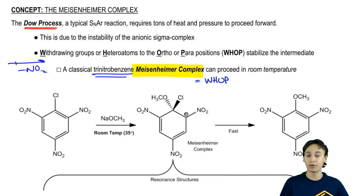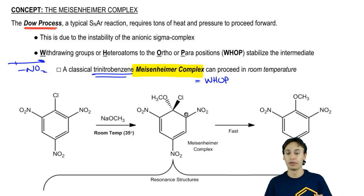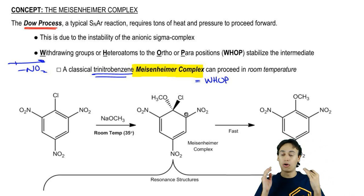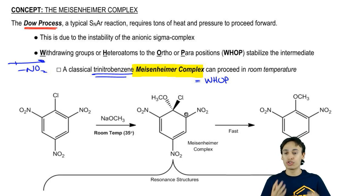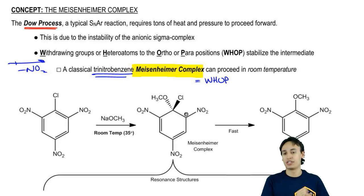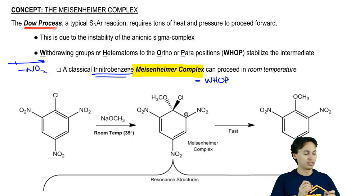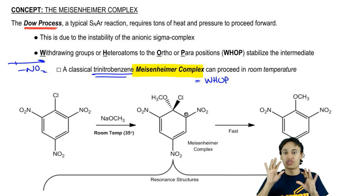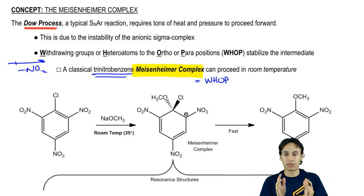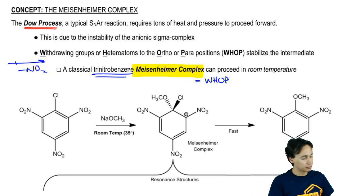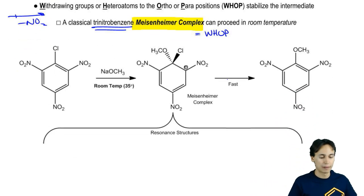A Meisenheimer complex is like an ultimate WAP where you have a molecule that has either heteroatoms or withdrawing groups in the ortho and para positions. Those are essentially synonyms of each other — a Meisenheimer complex is just any benzene that is in a WAP formation. Let's take a look at this.